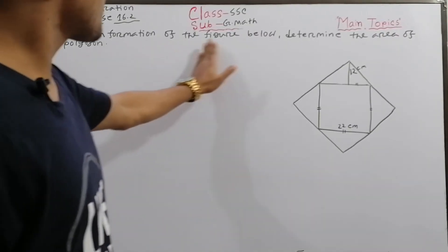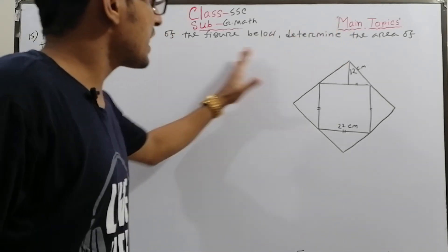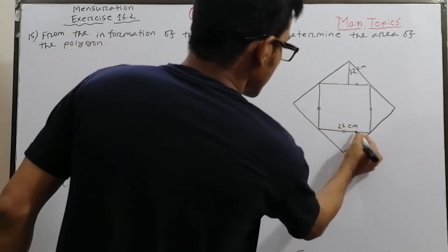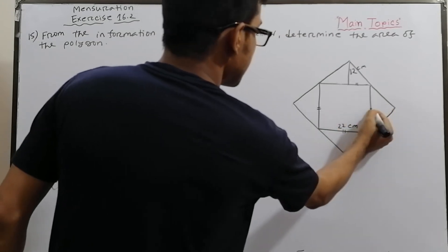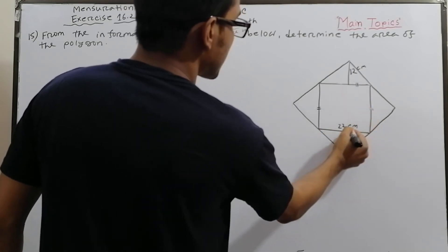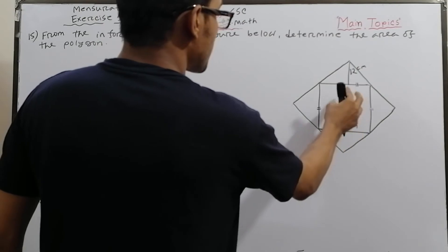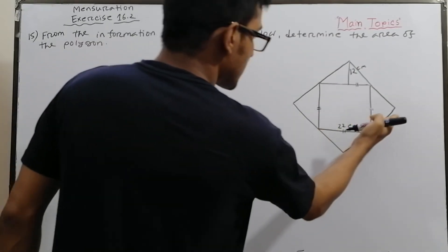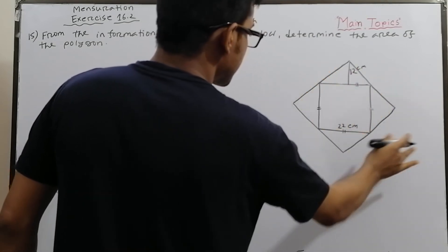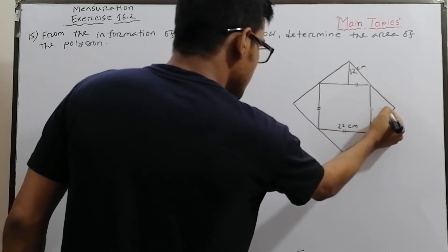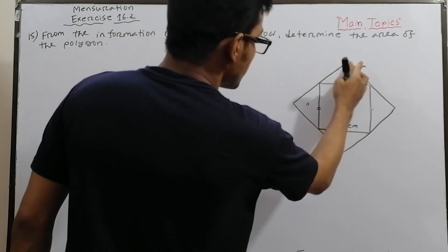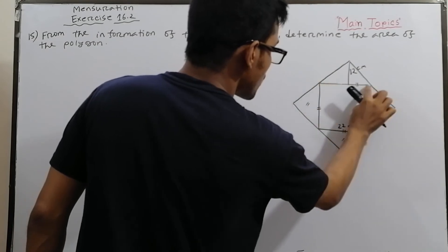Question 15: From the information of the figure below, determine the area of the polygon. Looking at the figure, the side of the square equals 22. In the middle of the figure there is a square, and at each side there is a triangle. Each triangle has a base of 22 and height of 12.